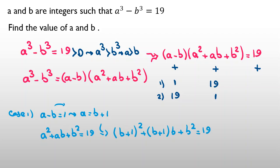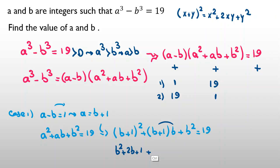Let's expand. An important identity you should memorize: (x plus y)² equals x² plus 2xy plus y². Using it here: (b plus 1)² expands to b² plus 2b plus 1, plus b² plus b, plus b², and taking 19 to the left-hand side gives minus 19 equal to 0.